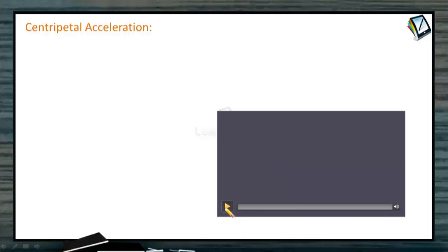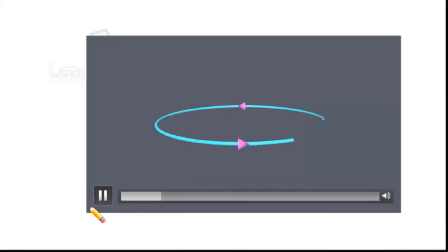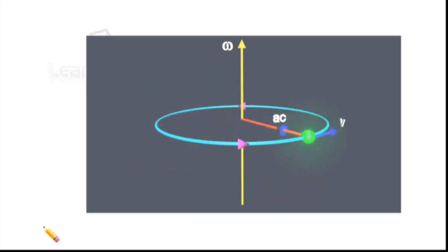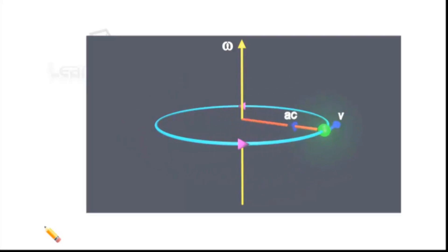Let us study about centripetal acceleration. The body is moving in a circular motion — this is the axis. The particle P moves in a circle. Linear velocity or tangential velocity is along the tangential direction, centripetal acceleration is directed towards the centre, and angular velocity omega is along the axis.